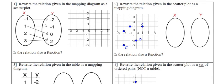Question number one says that we should rewrite the relation given in the mapping diagram as a scatter plot. Now, the word scatter plot — if we can break it down, what does scatter mean? Scatter means to spread out or all over the place. So in other words, this question is just asking us to plot some points. The scatter plot will look similar to the diagram seen at question two. We're plotting some points and we're not going to connect them with any straight lines.